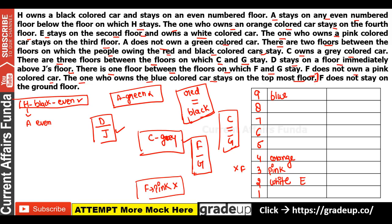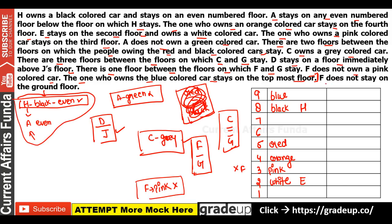Let's revisit the red-black connection. When we place black on floor 6, red goes to floor 9 — but that possibility gets cut because A must be on an even floor below H. So if H is on 6, A must be on an even floor below 6, which is 2 or 4. But floor 4 is orange. Also: F does not stay on the ground floor, meaning F cannot be on floor 1.